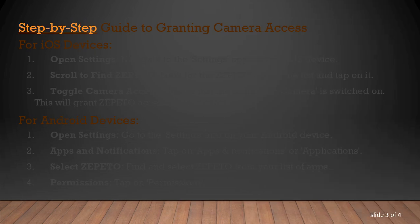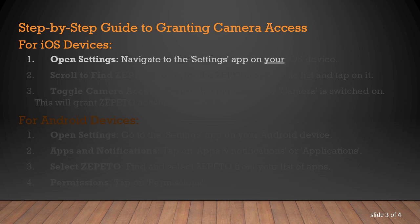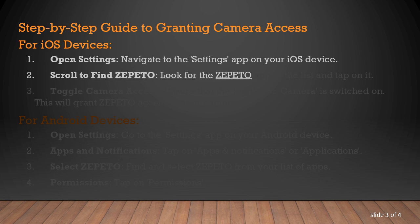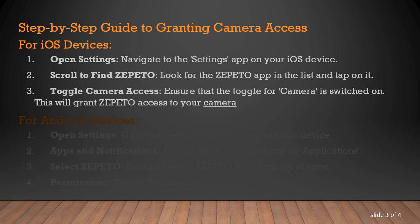Step by Step Guide to Granting Camera Access. For iOS Devices: Open Settings — navigate to the Settings app on your iOS device. Scroll to find Zepetto — look for the Zepetto app in the list and tap on it. Toggle Camera Access — ensure that the toggle for Camera is switched on. This will grant Zepetto access to your camera.